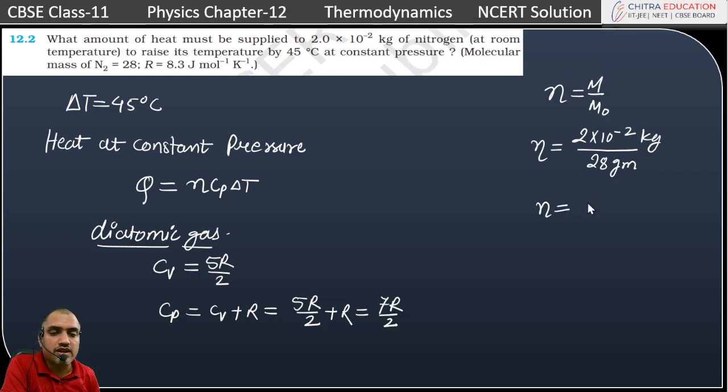0.2 grams divided by 28. Sorry, it will be 20/7. This is 2 × 10⁻² × 1000 divided by 28, so ultimately it will be 20/28.